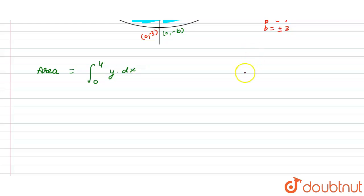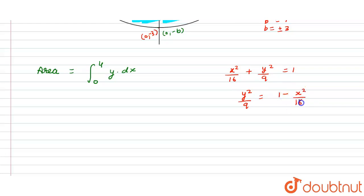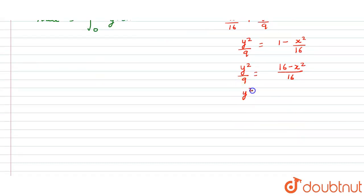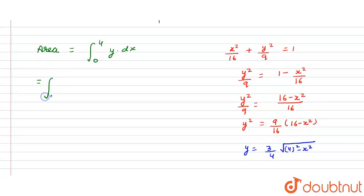Now we have to find the value of y. From the equation x²/16 + y²/9 = 1, we get y²/9 = 1 − x²/16. Taking LCM gives y²/9 = (16 − x²)/16, so y² = (9/16)(16 − x²), and therefore y = (3/4)√(4² − x²).